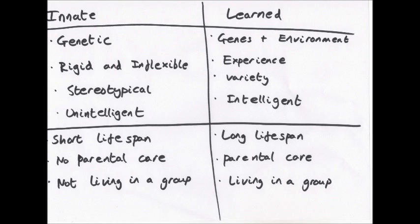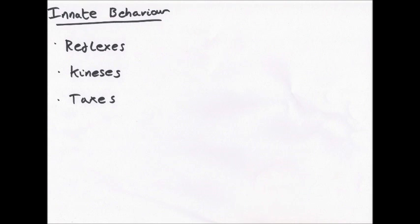Innate behaviour—this is a lot about examples. I'm going to go through examples which I found myself and explain what they actually mean. We have reflexes, kinesis, and taxes. A reflex: many invertebrates have an escape reflex, the function of which is to avoid predators.